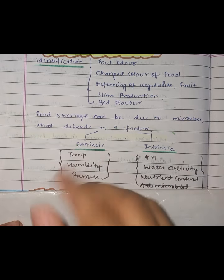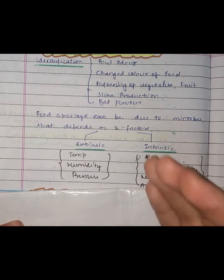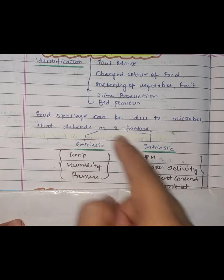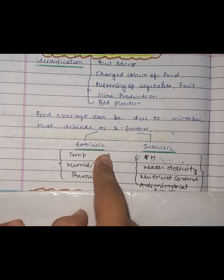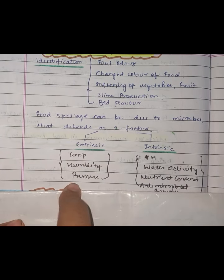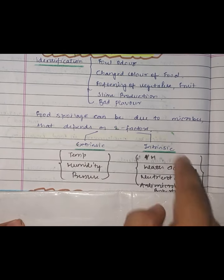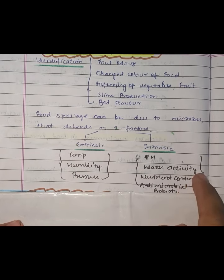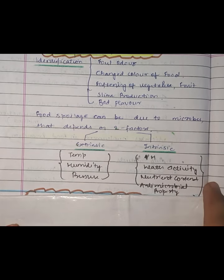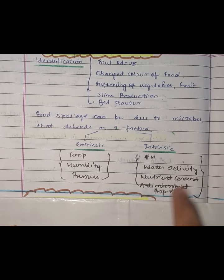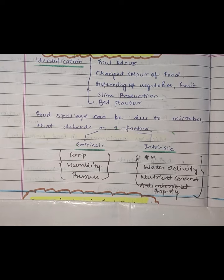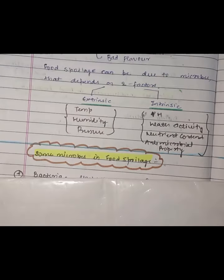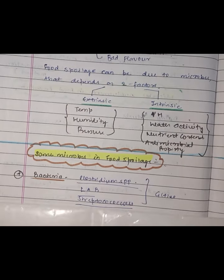Extrinsic means outside factors, and intrinsic means inside factors. Extrinsic factors include temperature, humidity, and pressure. Intrinsic factors include pH, water activity, nutrient content, and the antimicrobial properties of that particular food.